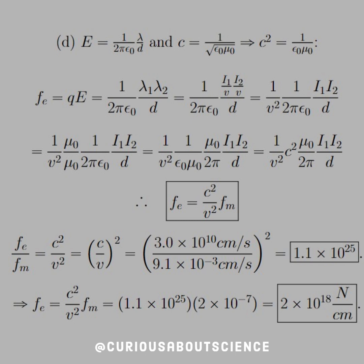Now we'll move forward to part D, where the electric field of the wire we know is 1 over 2 pi epsilon naught lambda over D. And we know that the relationship with C between epsilon naught and mu naught is C equals 1 over the square root epsilon naught mu naught, or C squared equals 1 over epsilon naught mu naught.